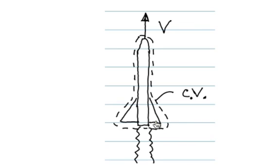Suppose we're analyzing a rocket in motion. We sketch a control volume surrounding the rocket, shown here in dotted lines, and indicated with the initials CV for control volume.